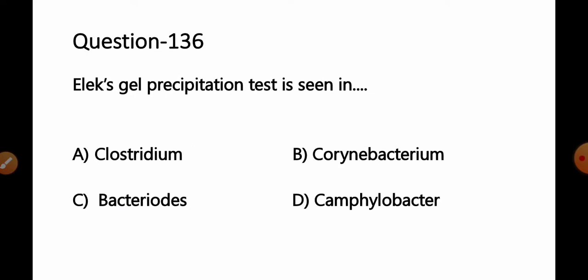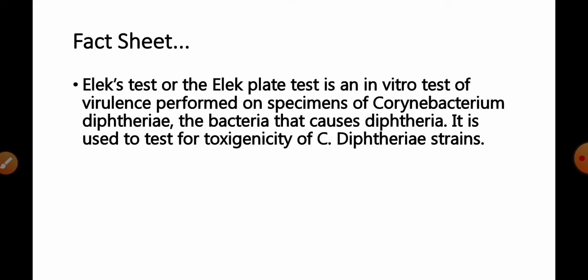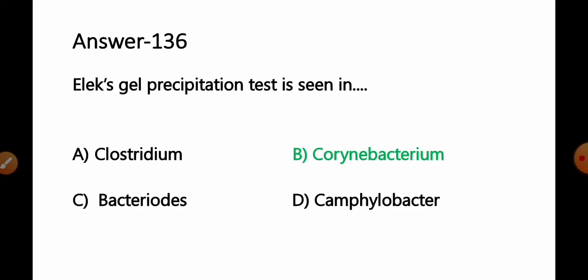Question 136: Elek gel precipitation test is seen in: option A Clostridium, B Corynebacterium, C Bacteroides, D Campylobacter. The Elek test or Elek plate test is an in vitro test for virulence performed on specimens of Corynebacterium diphtheriae, the bacteria that causes diphtheria. It is used to test the toxigenicity of Corynebacterium diphtheriae strains. Option B Corynebacterium is the correct answer.